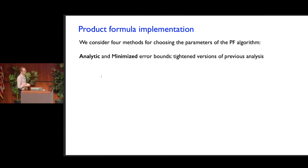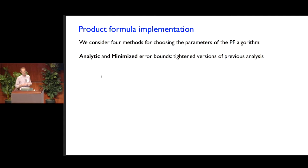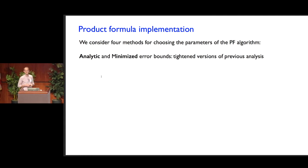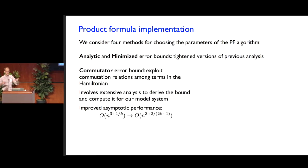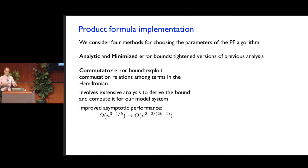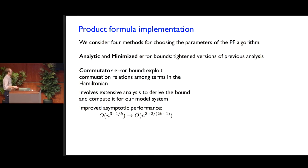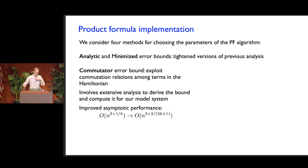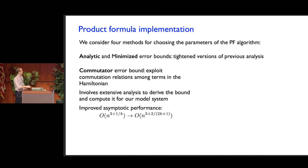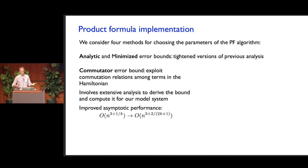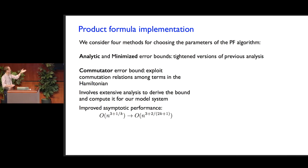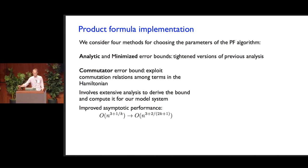We consider four different methods for bounding the error. We consider two bounds we call the analytic bound and the minimized bound — somewhat tightened versions of previous analysis. Then we develop another bound called the commutator bound, which exploits the possibility that some terms in the Hamiltonian may commute. We look at the commutation relations among various terms in the Hamiltonian. This is quite involved and makes up a pretty big fraction of the paper, where we develop these methods and also develop methods to actually evaluate the bound for our model system — which is not an easy thing to do. When we do this, we get an improved bound which actually improves the asymptotic performance as a function of n a little bit, and also improves the constant, giving fairly substantial savings in practical terms.